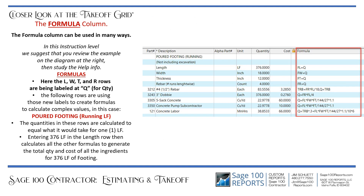The formula column can be used in many ways, or not at all. At this instruction level we suggest you review the example on the diagram at the right and then study the help info — there's quite a bit to learn, with examples in the sample company. In this case the L, W, T, and R rows — length, width, thickness, and rebar — are labeled and equated to Q (quantity). The following rows use those labels to create formulas to calculate complex values, in this case poured footing running linear feet. It's easy to understand and straightforward.